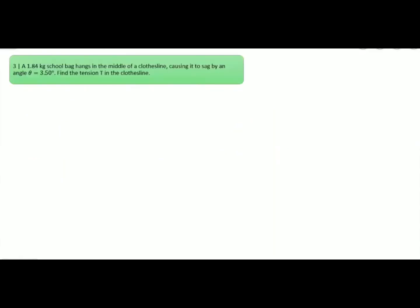Question number three: a 1.84 kg school bag hangs in the middle of a clothes line, causing it to sag by an angle of 3.50 degrees. Find the tension T in the clothes line. The clothes line makes an angle of 3.50 degrees with the x-axis on both sides due to the presence of the bag. The weight of the bag acts downward: W = mg = 1.84 × 9.8 = 18 N.